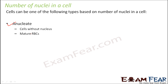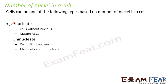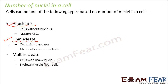If a cell doesn't have a nucleus, it cannot reproduce, but it can remain as a dead cell. For example, tracheids are dead cells, and mature RBCs in human beings do not have a nucleus - these are all anucleate cells. The second type is uninucleate - cells with only one nucleus, which is the most common. The third type is multinucleate - a cell with many nuclei, such as skeletal muscle cells, which have multiple nuclei in a single cell.